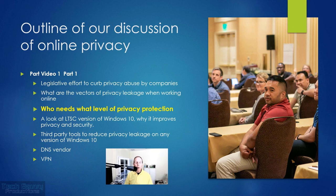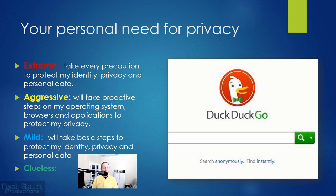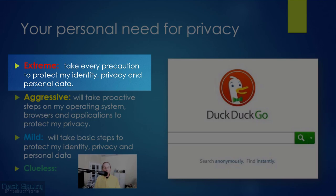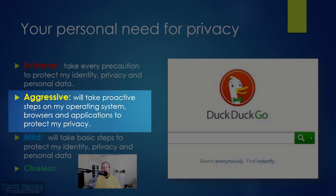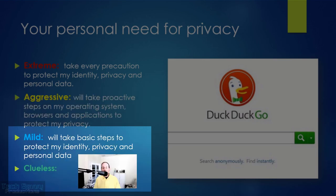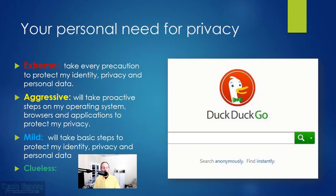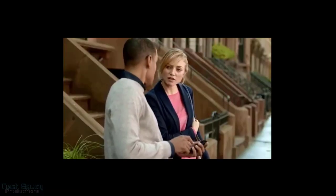Who needs what level of privacy protection? Everybody is different. Your personal need for privacy will vary based on the individual. If you're hiding from domestic abuse, you may need extreme protection for privacy and identity information while working online. If you're more aggressive and proactive, you can do a lot with your operating system, browser, and applications. You might do something mild, like switching from Google to DuckDuckGo. And of course there's the completely clueless user.